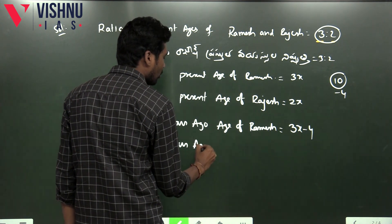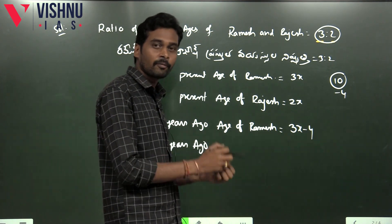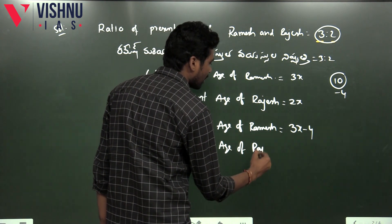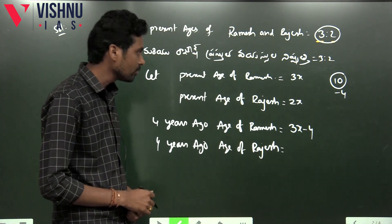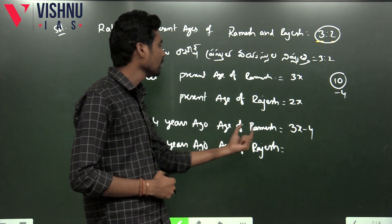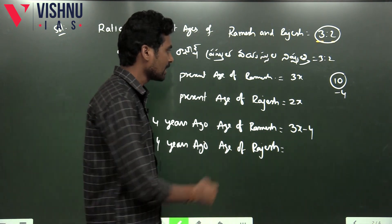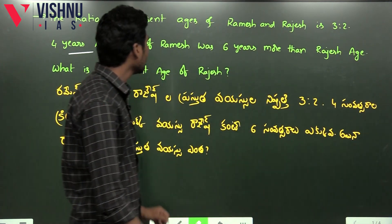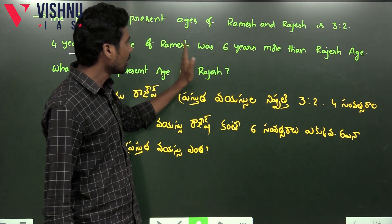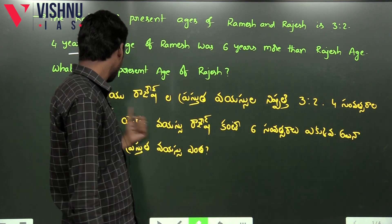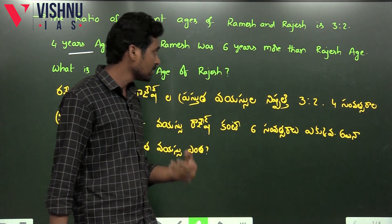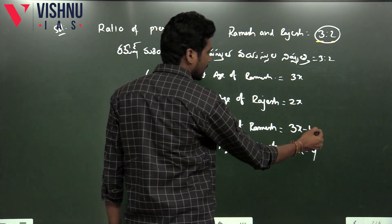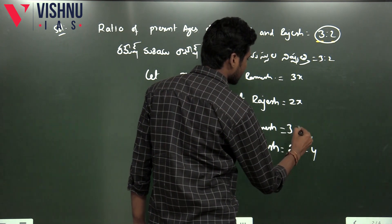Four years ago, we have the relationship. Four years ago, Rajesh's age follows the same logic. The condition was Ramesh was 6 years more than Rajesh. So four years ago, Ramesh is 3x minus 4. That is equal to 6 years more than Rajesh. Four years ago, Rajesh is 2x minus 4.